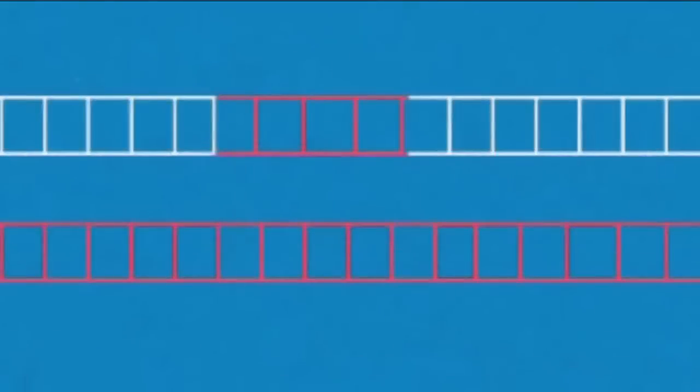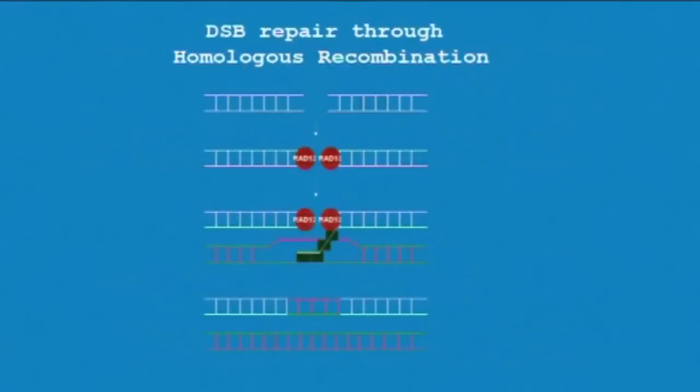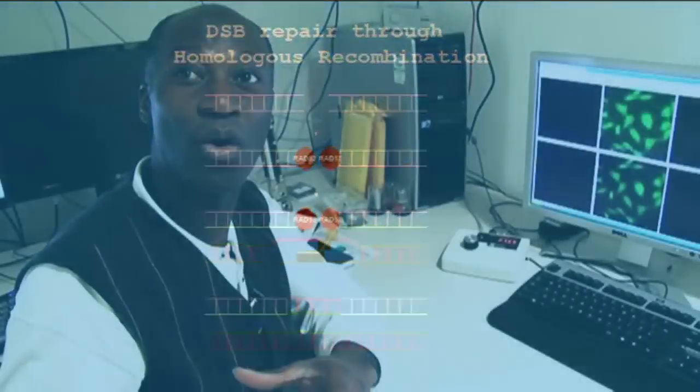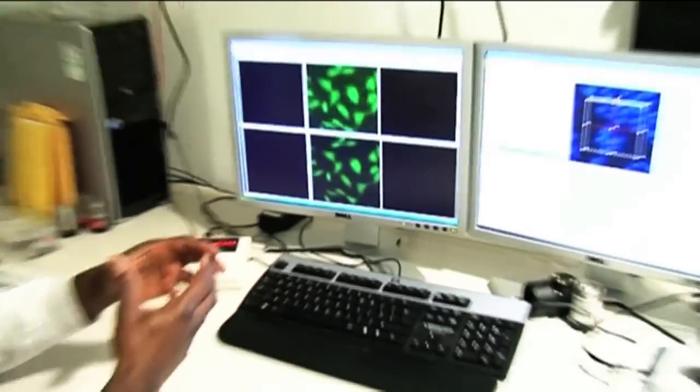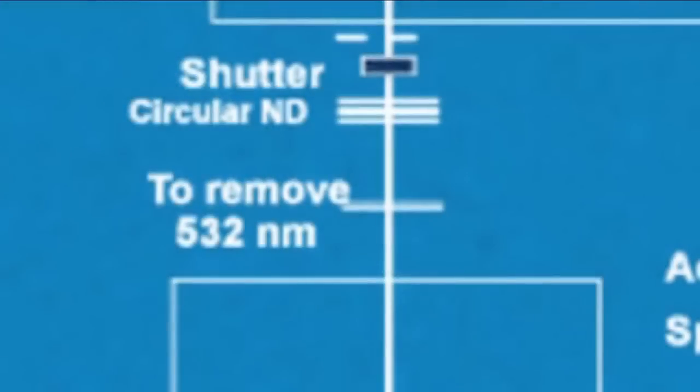Whereas in the past, you'd have to do this outside in a different room, in a radiation area, or if it's chemical, again, you have no control. But now we can control where we put the damage and watch how the DNA damage repair takes place.